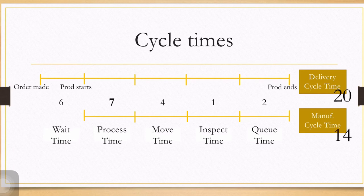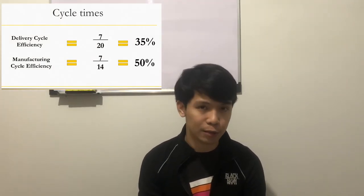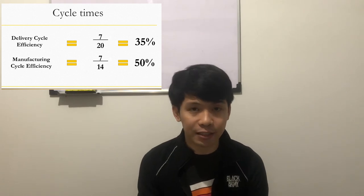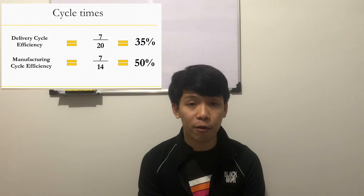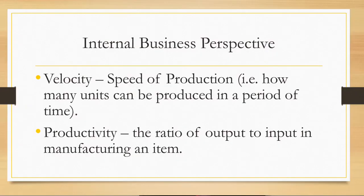We can also calculate the cycle efficiency. Delivery cycle efficiency: seven out of 20 days is productive, giving 35%. Manufacturing cycle efficiency: seven over 14 days gives 50%. So internal business perspective measures are those that say something about your efficiency in production facilities and operations. Other internal business perspective measures include velocity — the speed of production, how many units can be produced in a period of time — and productivity, the ratio of output to input in manufacturing an item.